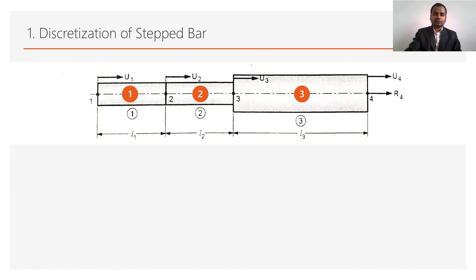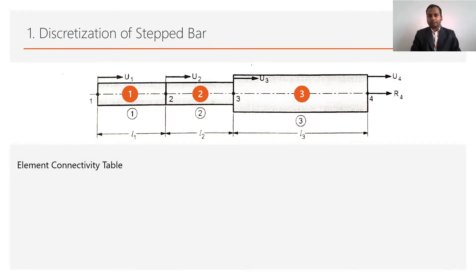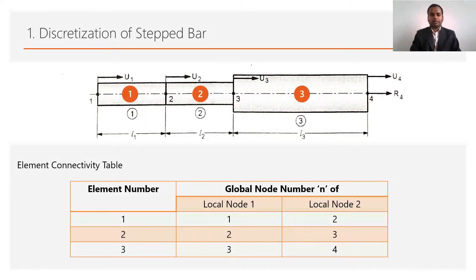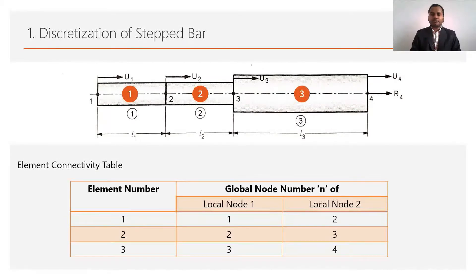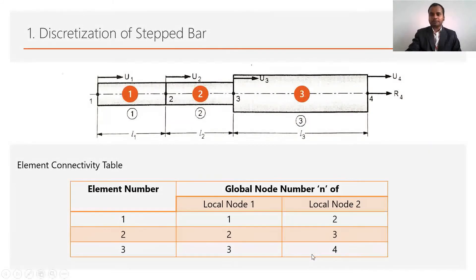After discretization, we write the element connectivity table. The table lists the element number and the global node numbers. Each element in the 1D bar element has 2 nodes only. Element 1 has nodes 1 and 2, element 2 has nodes 2 and 3, and element 3 has nodes 3 and 4.